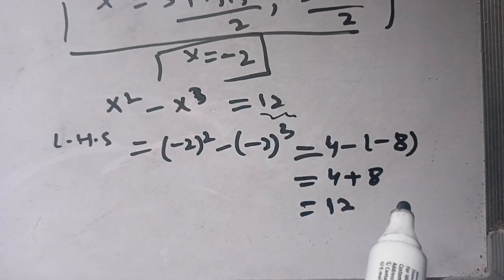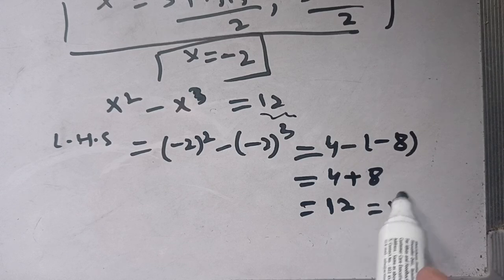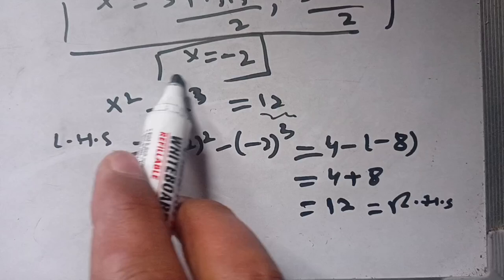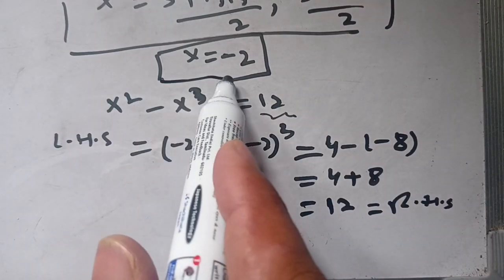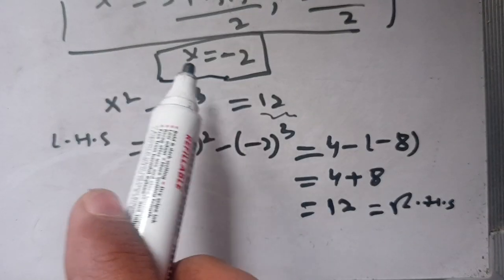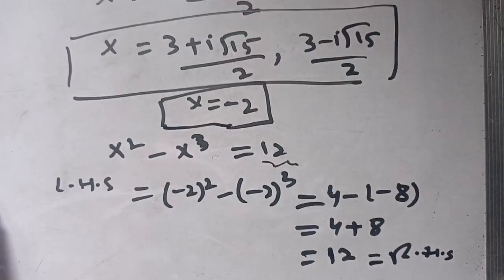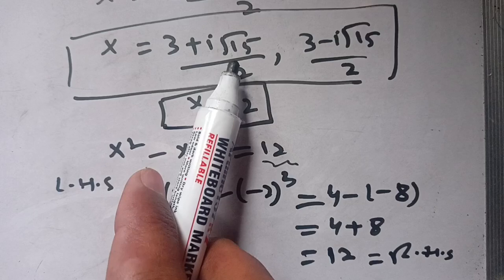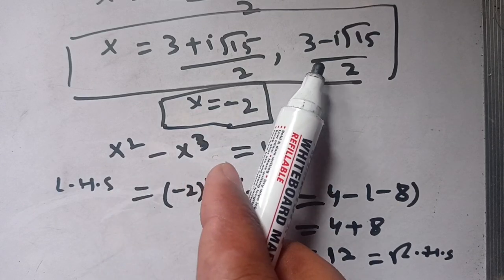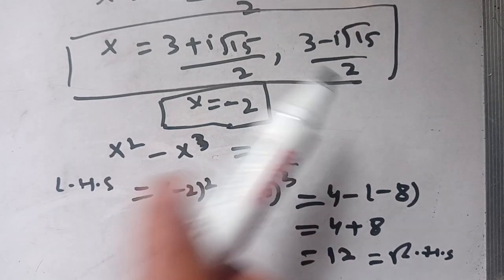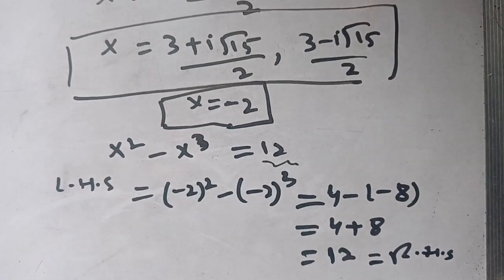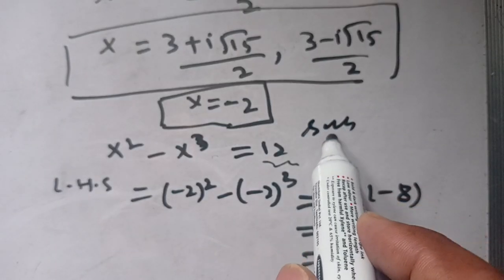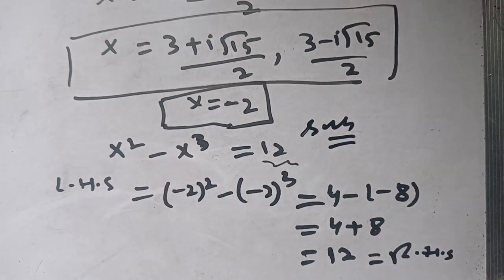Since the left hand side equals the right hand side, x equals minus 2 is confirmed as a real solution. The other two solutions are x equals (3 plus iota√15)/2 and x equals (3 minus iota√15)/2. If you are new here, make sure to subscribe to our channel for more informative videos. See you in the next video — bye!